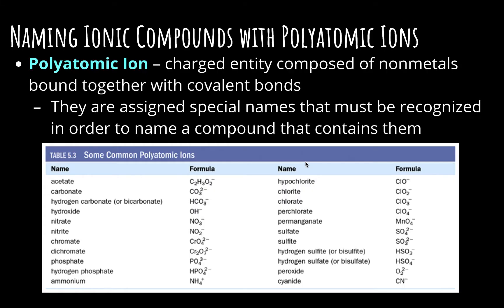Before we can do that, we need to talk for a second about what a polyatomic ion is. It's a charged entity that's composed of non-metals that are bound together with covalent bonds. So a polyatomic ion is a group of non-metals that are bound together, but as a group they have a charge. So they act like either a cation or an anion would, even though it's a group of atoms together. These polyatomic ions have special names that we have to be able to recognize in order to name compounds that contain them.